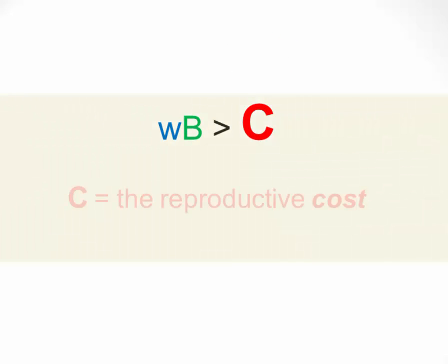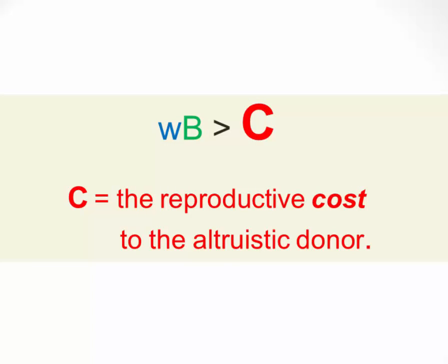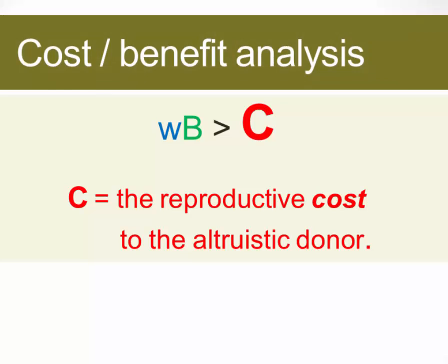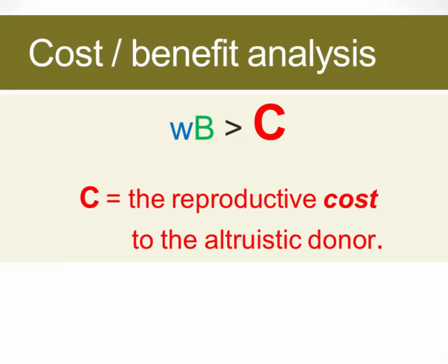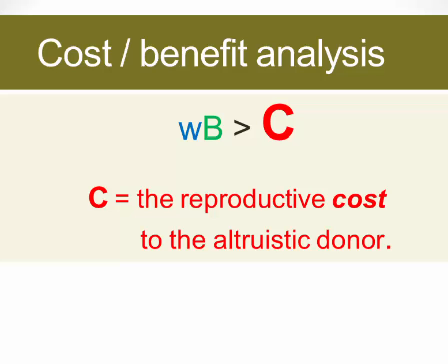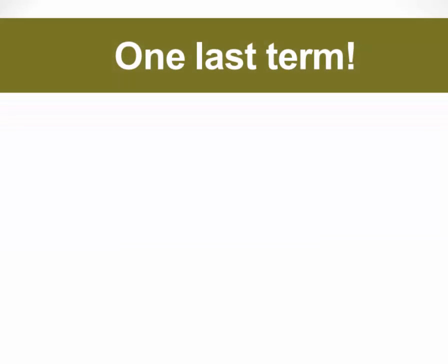Similarly, the letter C in Axelrod's Rule refers to the reproductive cost to an altruistic donor. So again, this is just cost-benefit analysis. And so far, two of the three terms are identical in Hamilton's Rule and in Axelrod's Rule.